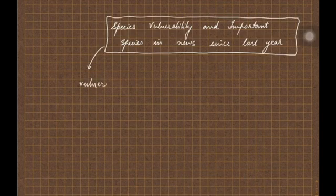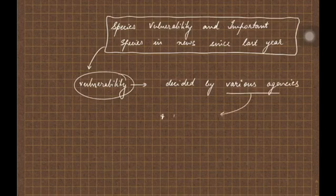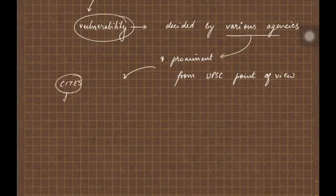If you talk about vulnerability, vulnerability is decided by various agencies. There are four prominent agencies that determine vulnerability of species from UPSC point of view. The first species is CITES, that is Convention on International Trading Endangered Species.